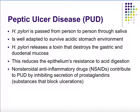H. pylori is passed person to person through saliva. It's a bacterium well adapted to survive in the very acidic environment of the stomach, which normally secretes hydrochloric acid to destroy pathogens. H. pylori releases a toxin that destroys the gastric and duodenal mucosa, making it more vulnerable to erosion. With less resistance, acids essentially digest the stomach wall, the lower esophagus, or the first parts of the small intestine.